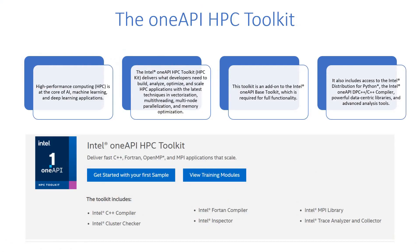The next one is the OneAPI HPC Toolkit — HPC meaning High Performance Computing. This is at the core of AI, machine learning, and deep learning applications. When you want to develop applications that are complex and require more computing power, you go with the High Performance Computing Toolkit. It delivers what developers need to build, analyze, optimize, and scale, with the latest techniques in vectorization, multi-threading, multi-node parallelization, and memory optimization. This toolkit is an add-on to the Intel OneAPI Base Toolkit. It includes the Intel C++ compiler, Fortran compiler, MPI library, Intel Cluster Checker, Inspector, and Trace Analysis and Collector.